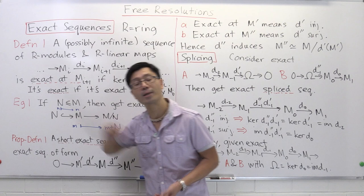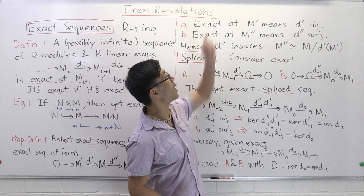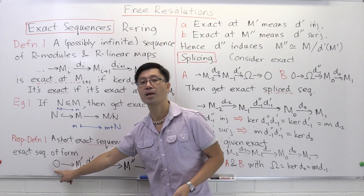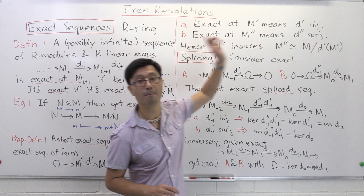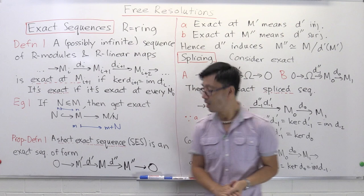What does it mean to be exact at M'? You want the kernel of the map d' to equal the image of the zero map. But the image of zero is zero, so the kernel of d' must be zero—which means d' is injective. So being exact at M' means precisely that d' is an injective map.